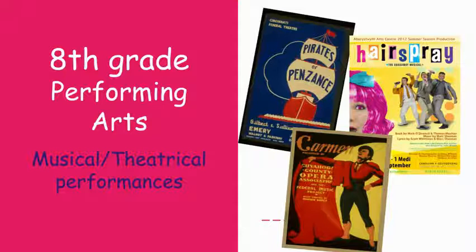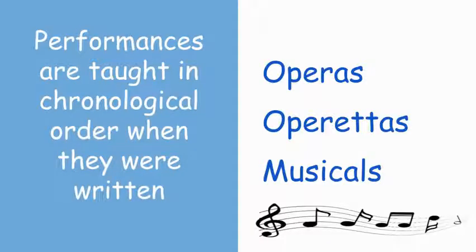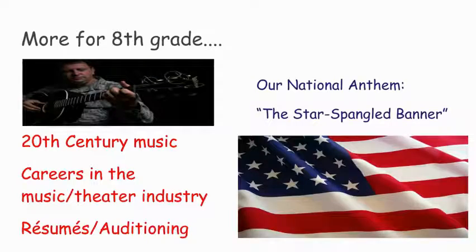In eighth grade performing arts, there are a lot of different things focused on as far as musical and theatrical performances. At the beginning of the marking period, we start with a discussion of theater vocabulary that we'll be using throughout the entire marking period. Then we move on to our first performance-based musical performance, which is the opera. Students study operas — we particularly study five in our textbook. After that we move on to operettas, then musicals, taught in chronological order from when they were written.